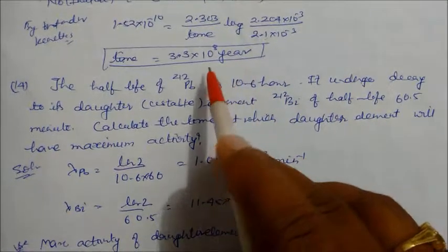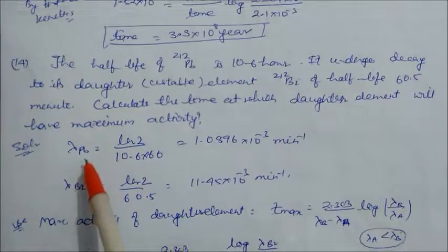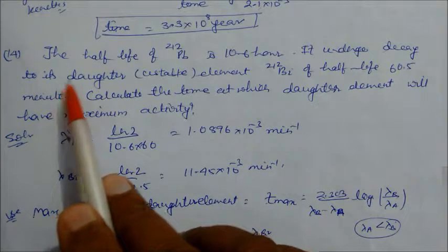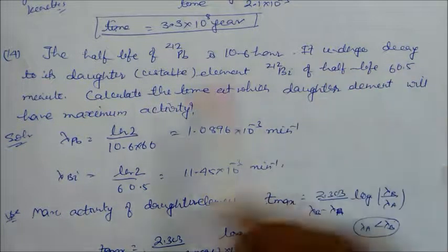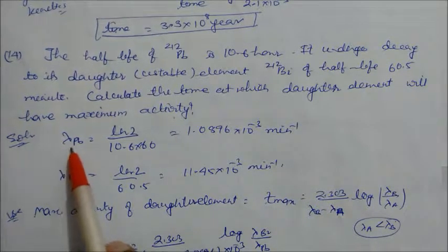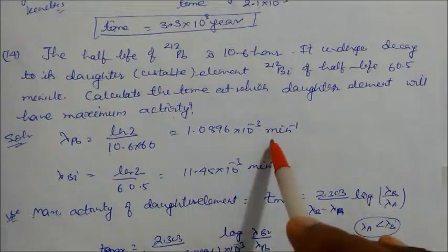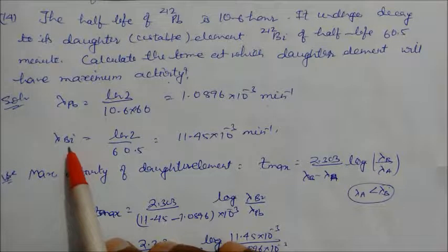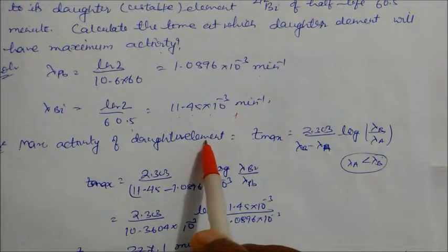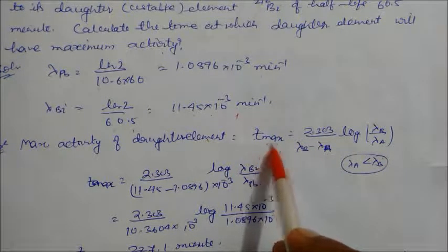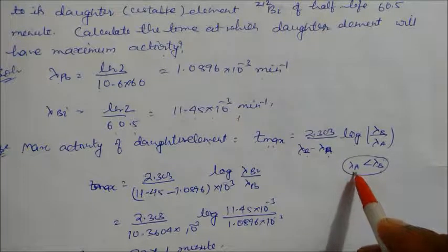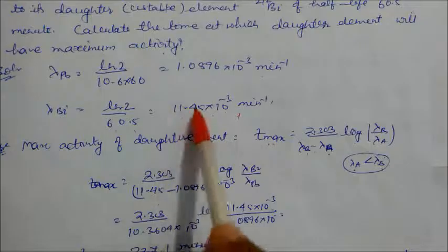Problem 14: The half-life of lead-212 is 10.6 hours. It undergoes alpha decay to bismuth, whose half-life is 60.5 minutes. Calculate the time at which the daughter element will have maximum activity. Decay constant of lead: λ_a = ln2/(10.6 × 60) per minute. Decay constant of bismuth: λ_b = ln2/60.5 per minute = 4.5×10⁻³ per minute. Using the formula T_max = 2.303/(λ_b − λ_a) × log(λ_b/λ_a), solving gives T_max = 227.1 minutes.